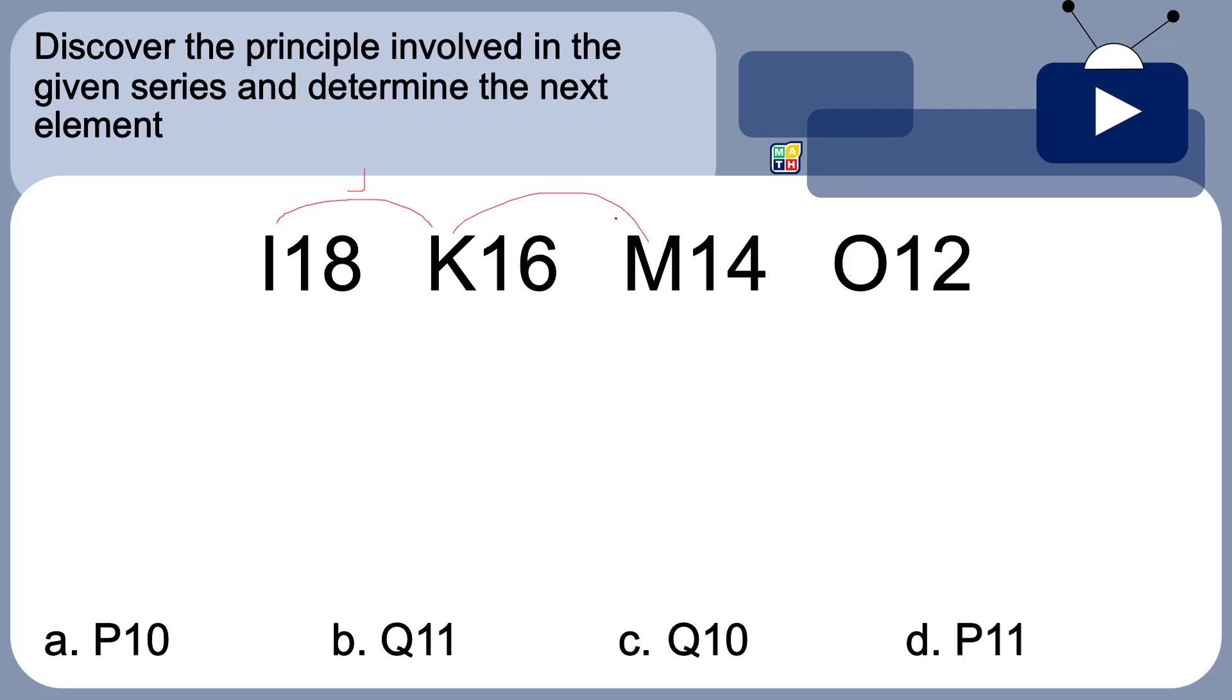When you go to K to M, you also skip one letter which is L. So, the principle of the letters here is skipping one letter in the usual alphabetical order.